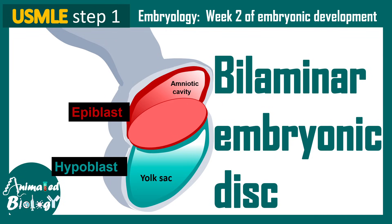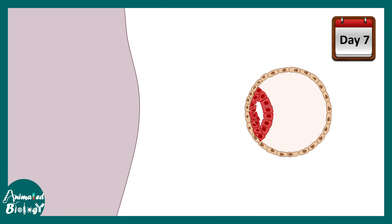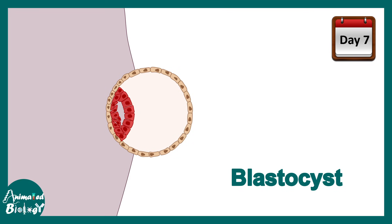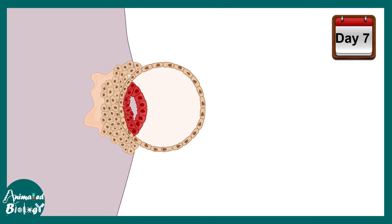In this video we'll be talking about a quick concept about the bilaminar embryonic disc, a terminology used in embryology. We are looking at the second week of embryonic development, and at around day 7 the embryo is known as the blastocyst. The blastocyst would eventually be embedded into the endometrium.